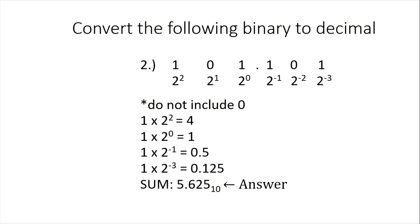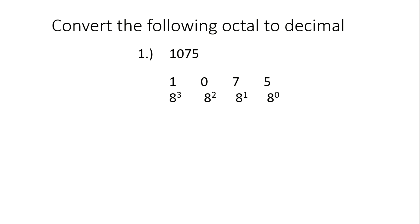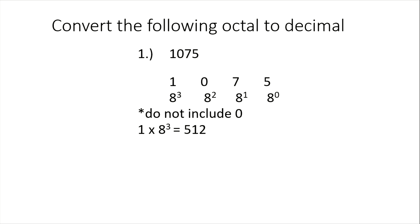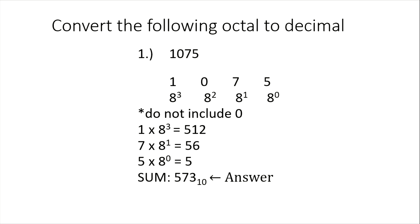Now let's go to octal. For a whole number in base 8, we have 8 raised to 0, 8 raised to 1, 8 raised to 2, 8 raised to 3. Excluding zeros, we have 1 times 8 raised to 3, plus 7 times 8 raised to 1, plus 5 times 8 raised to 0. Adding 512 plus 56 plus 5, we have 573 base 10.